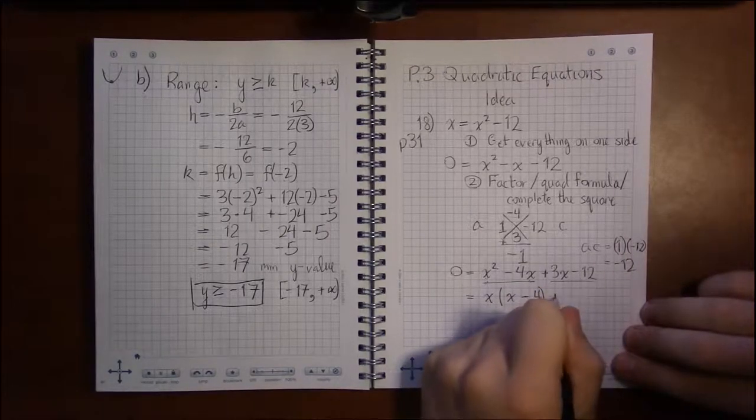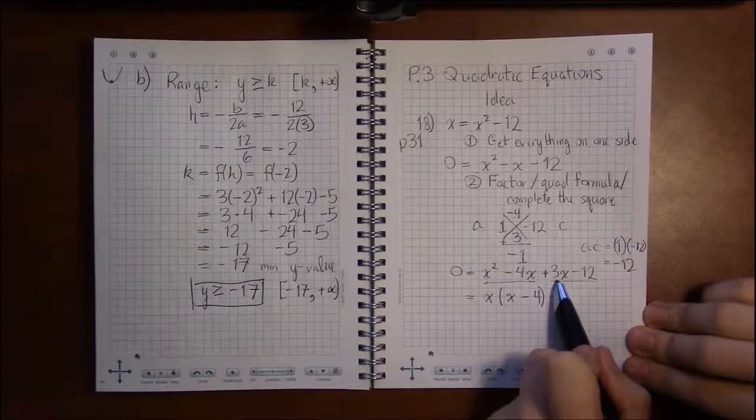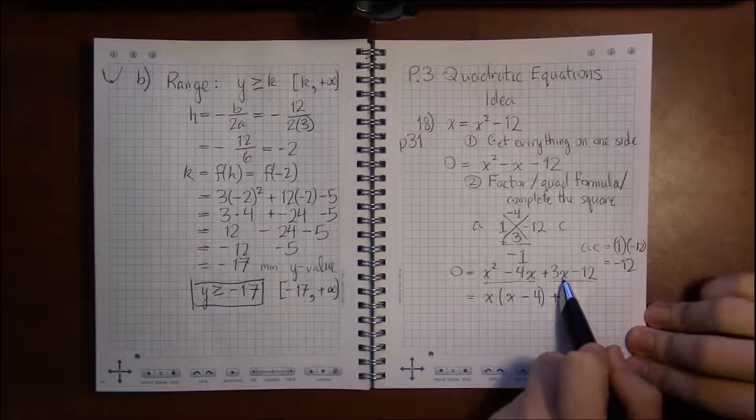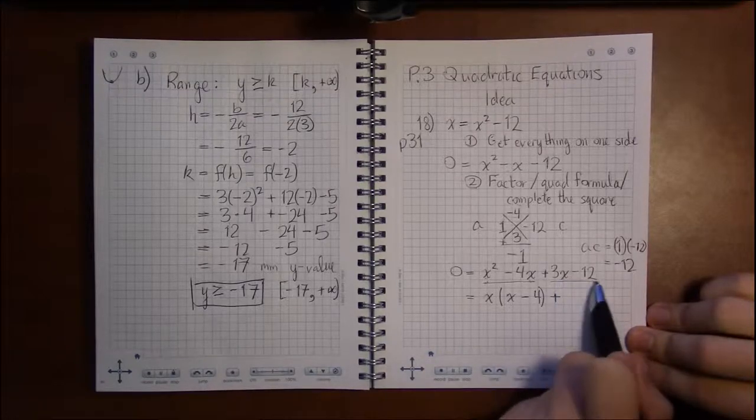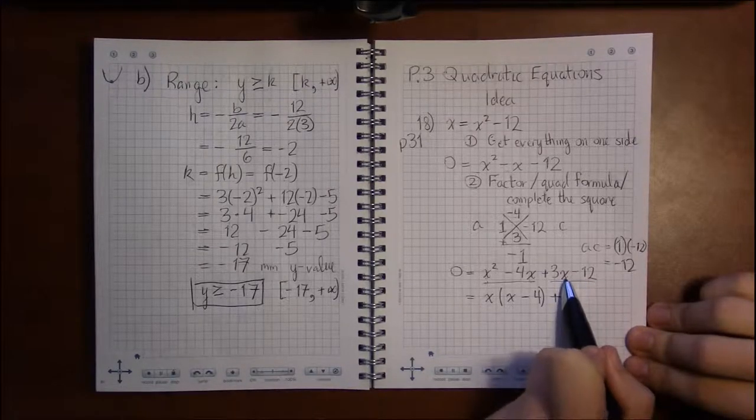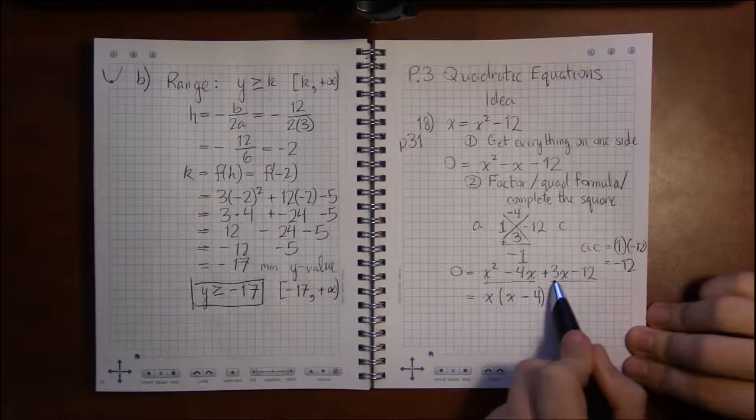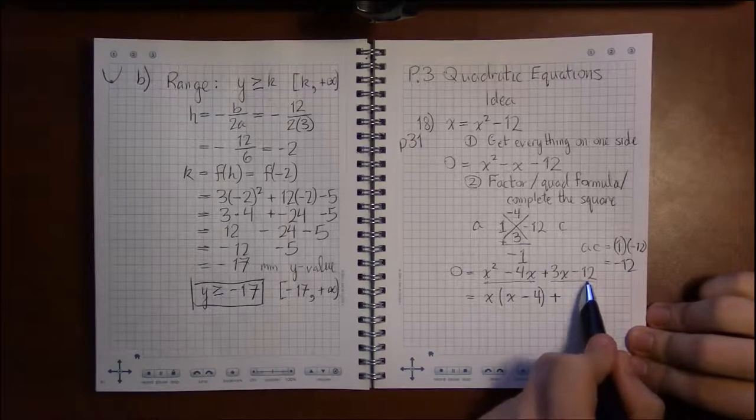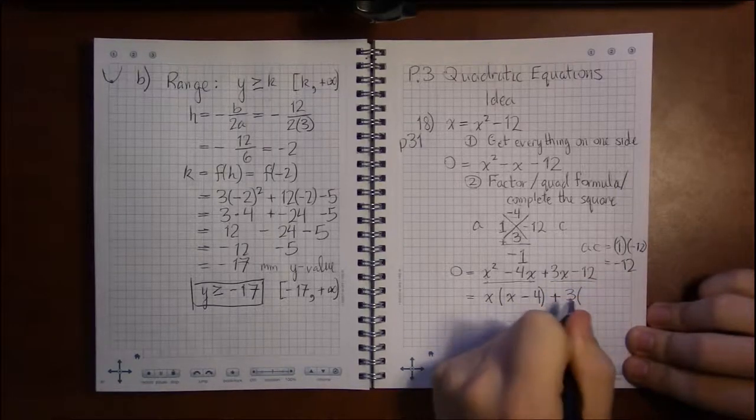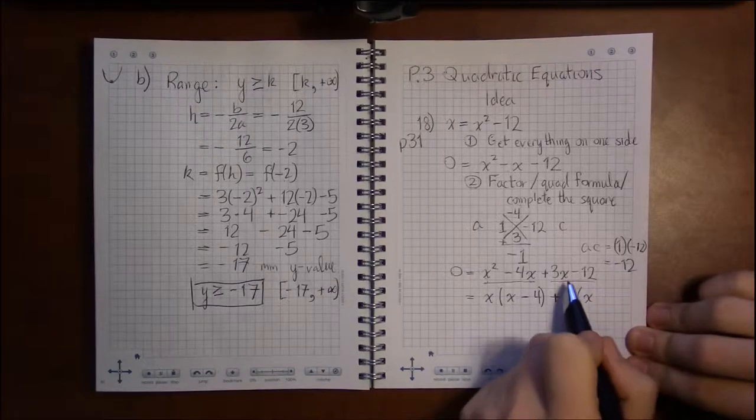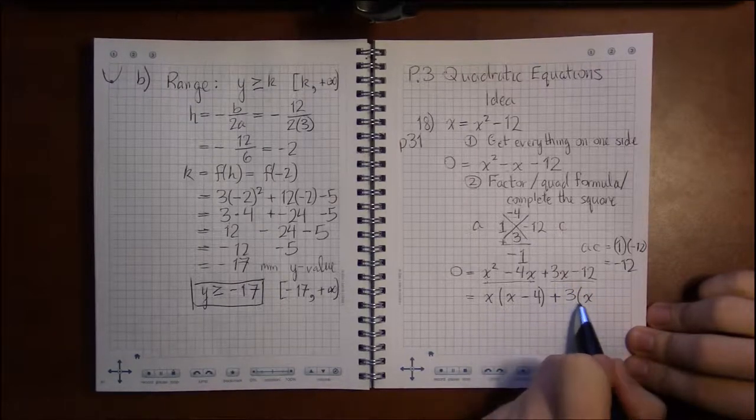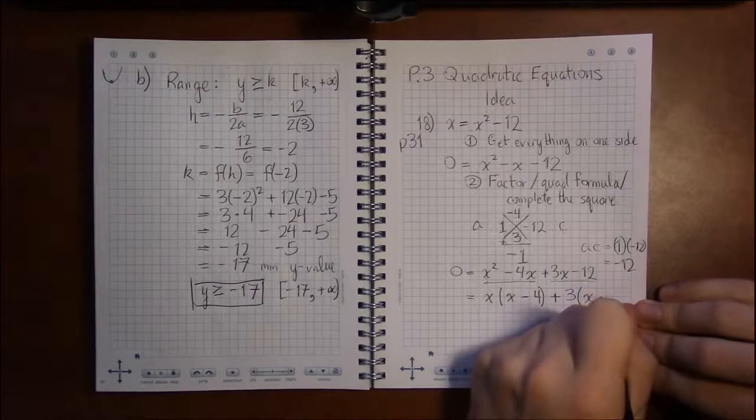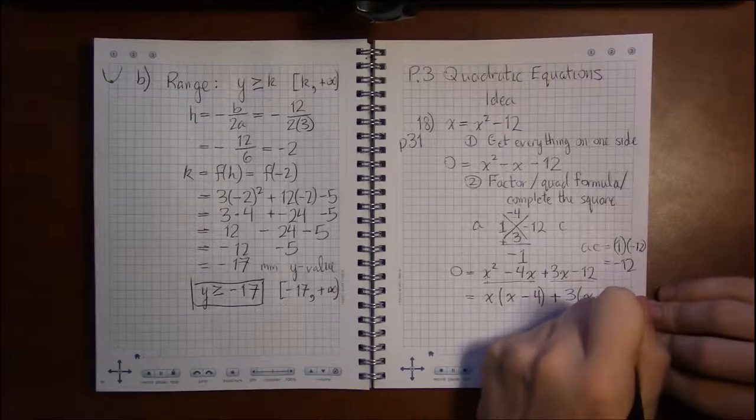Now, what do I have in common with these two terms? Well, this one has x but this one doesn't, so I can't pull an x out—I don't have an x in both terms. But I see 3 and 12, and 3 goes into 12 nicely, so I can pull 3 out. Pulling 3 out of the first term leaves me with x; pulling a 3 out of minus 12 leaves me with a minus 4.